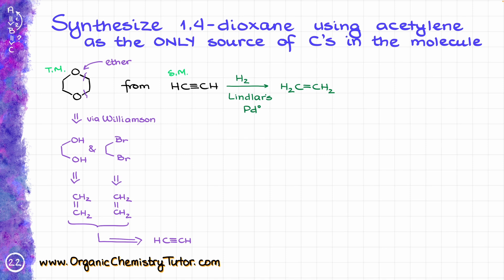Then I'm going to take my alkene and brominate it, making the corresponding vicinal dihalide, 1,2-dibromoethane. Another equivalent of my alkene I'm going to subject to dihydroxylation — I can use osmium tetroxide in any of a million different modifications of that reaction, or we could use potassium permanganate in cold basic conditions. Whichever conditions I choose, it's going to give me the corresponding ethylene glycol, or 1,2-ethanediol if you want the IUPAC name.